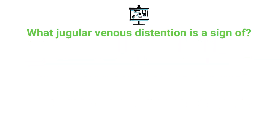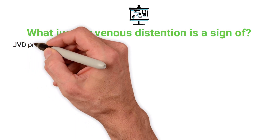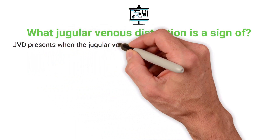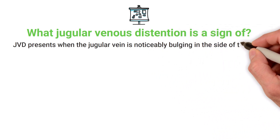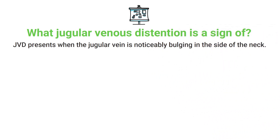To get this one correct, you simply just need to know what jugular venous distension is a sign of. As previously mentioned, jugular venous distension presents when the jugular vein is noticeably bulging in the side of the patient's neck. This is a sign of right heart failure and is often seen in patients who are fluid overloaded.